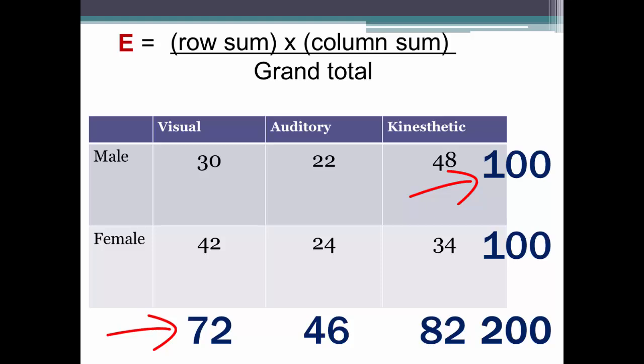100 times 72 is 7,200. Then we divide that by the grand total of 200. We come up with 36 for expected.